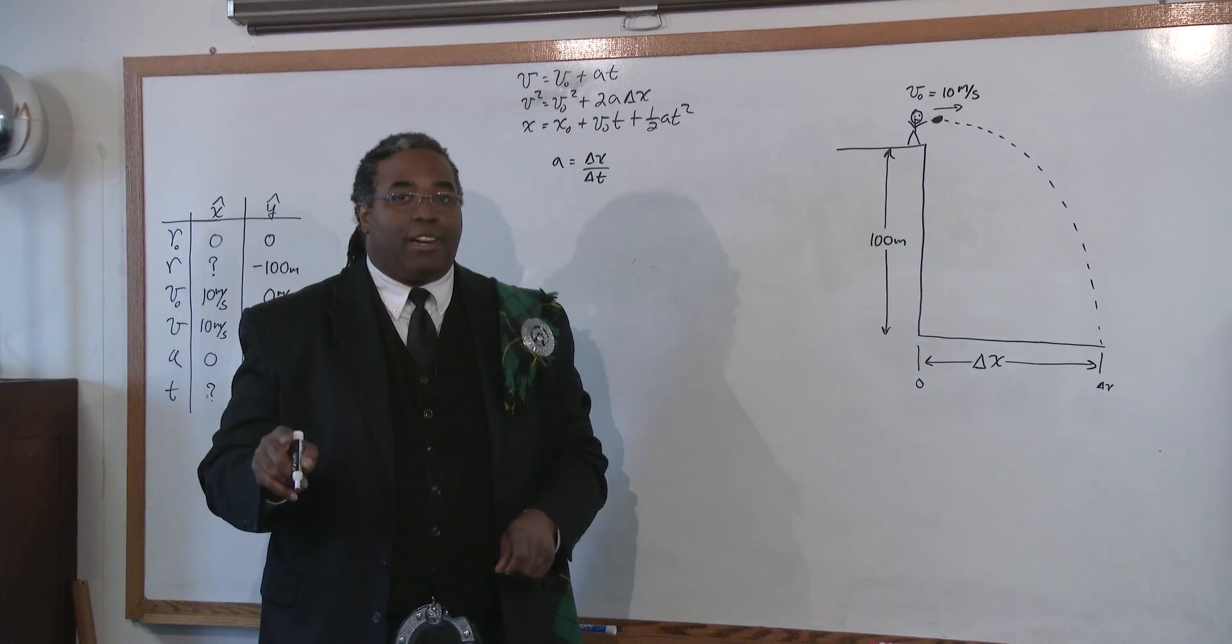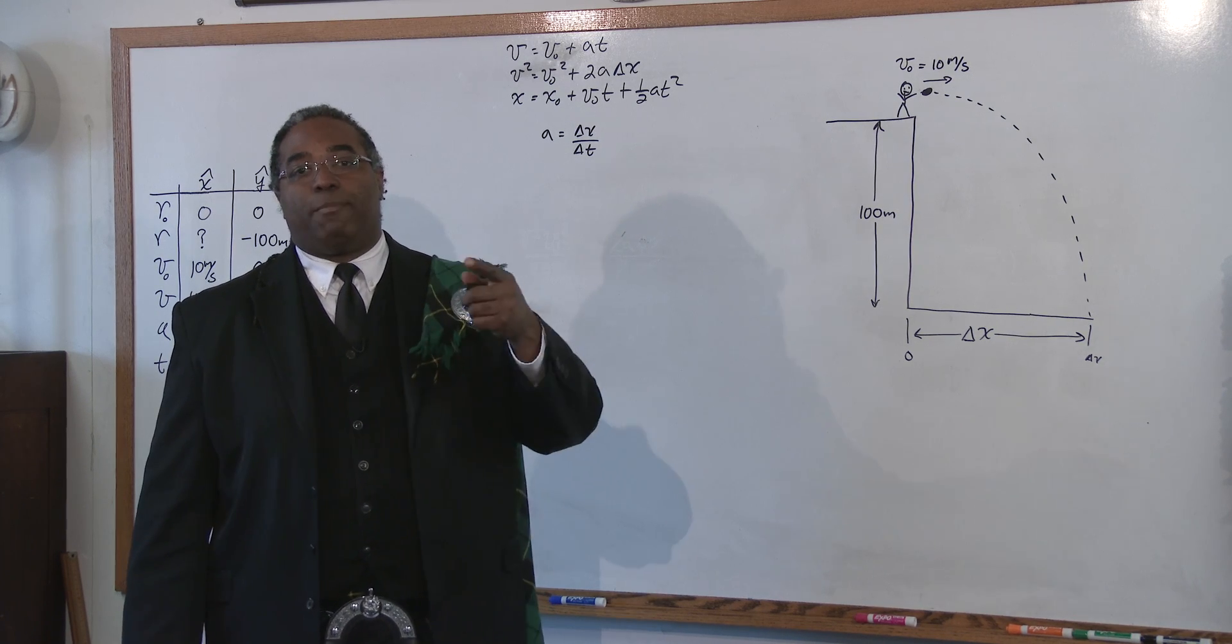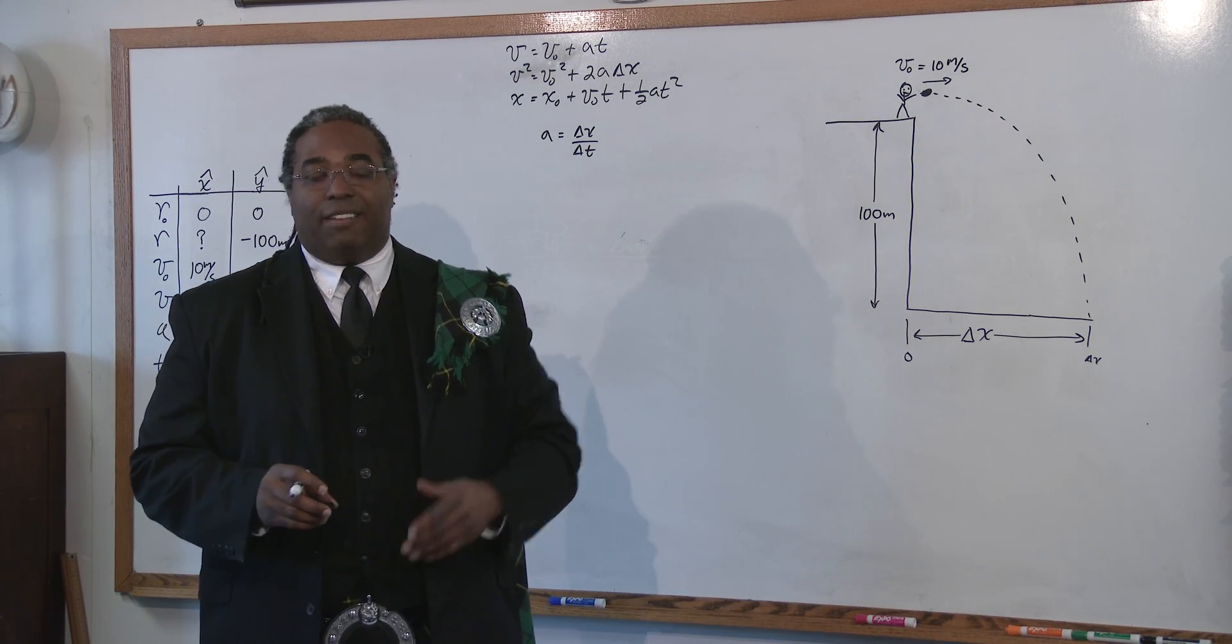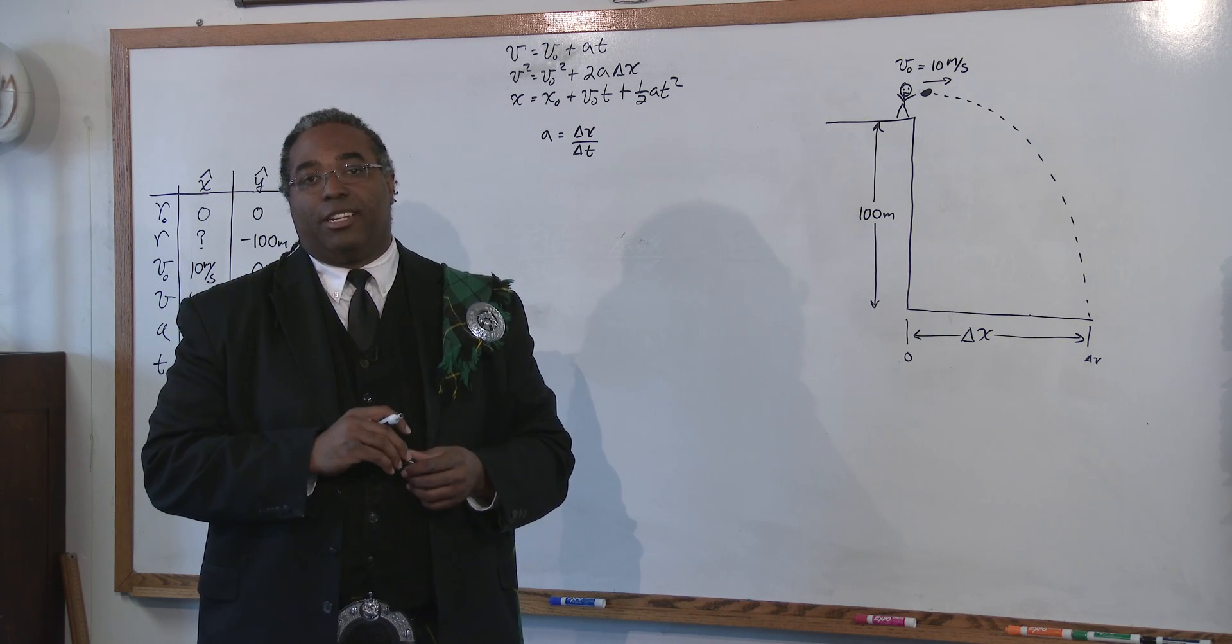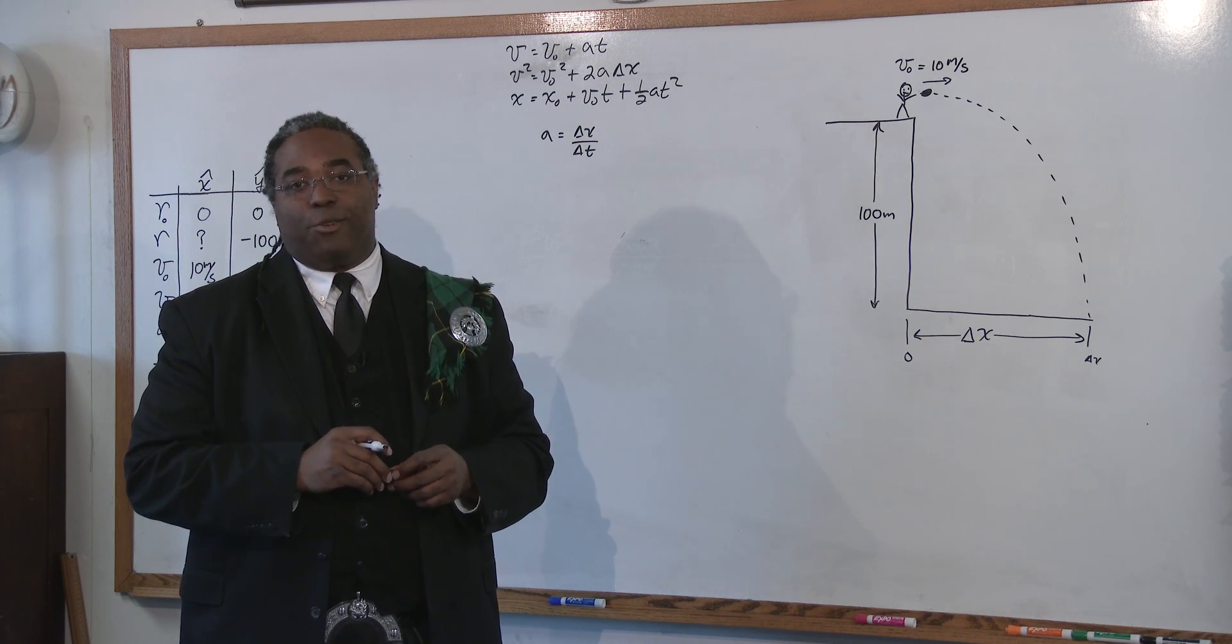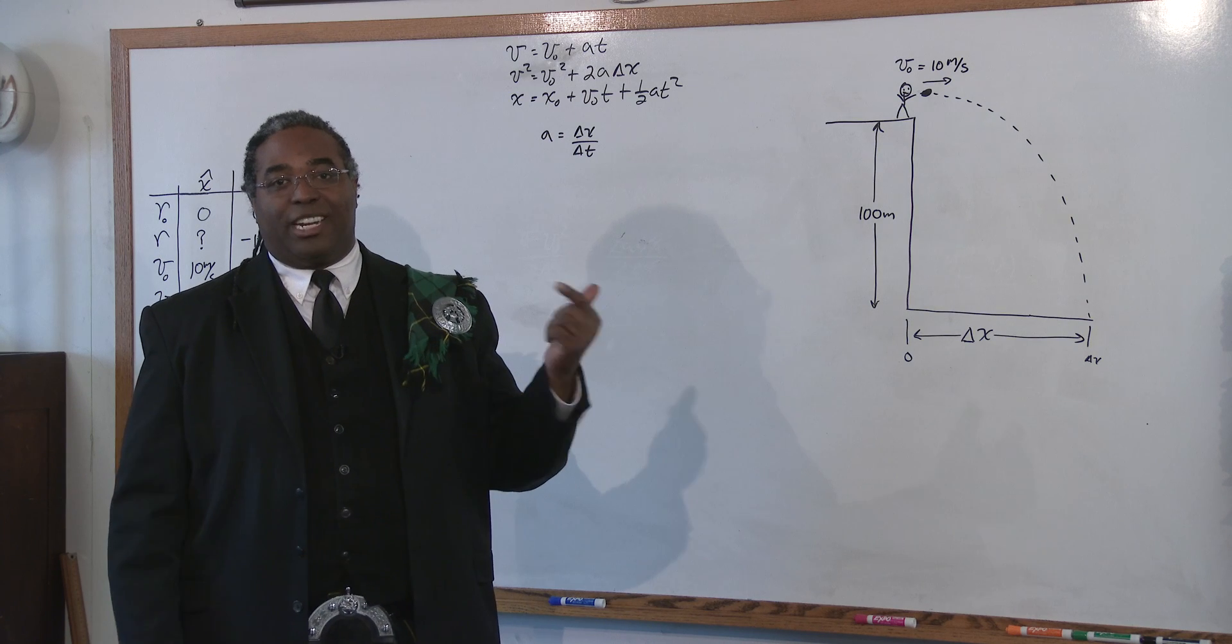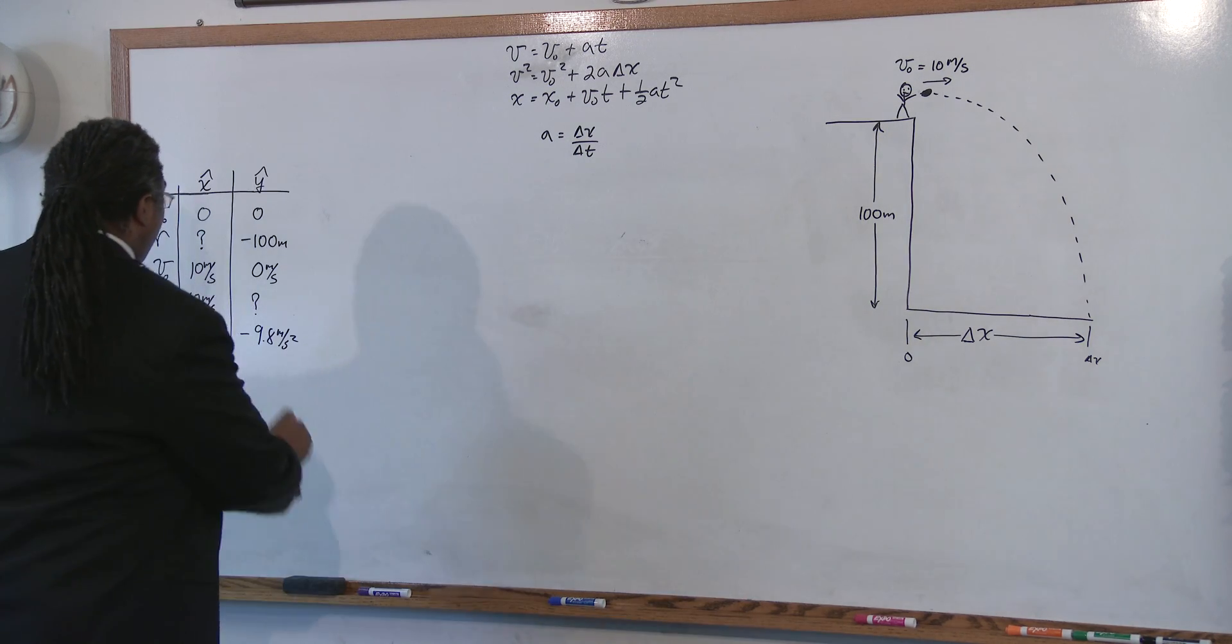We do know that the object accelerates at a negative 9.8 meters per second squared. Now, if you're getting ready for the MCAT, the MCAT assumes it rounds up and assumes that gravity is negative 10 meters per second. If you're in a physics class, 9 times out of 10, they're going to use the accepted constant, which is 9.8 meters per second squared. Either way, it's still considered g or the constant for gravity. So, and again, we don't know the time.